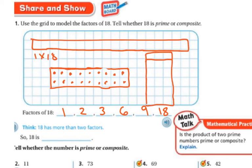And the way I know is I can count them. 1, 2, 3, 4, 5, 6, 7, 8, 9, 10, 11, 12, 13, 14, 15, 16, 17, 18. So 18, since it has more than just 1 and 8, 18 is a composite number.